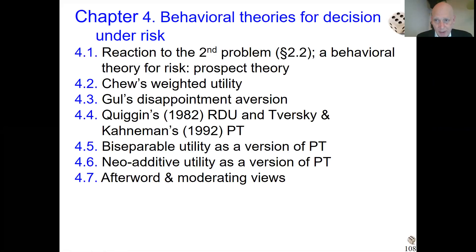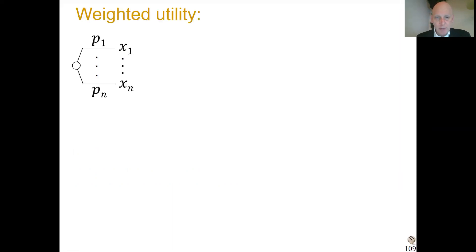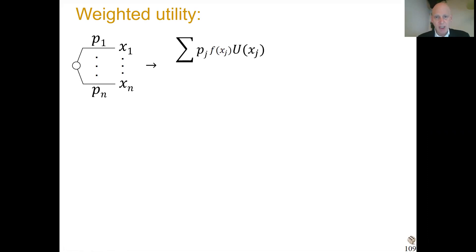Now we go to the second risk theory to accommodate behavioral findings. That was weighted utility, introduced by Chew Soo-Hong. Here's the formula. We have a lottery given the outcome of xj with probability pj. Now the formula of evaluation is as follows. If it were expected utility, a new thing comes in: a function f.